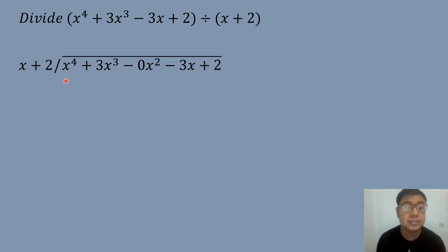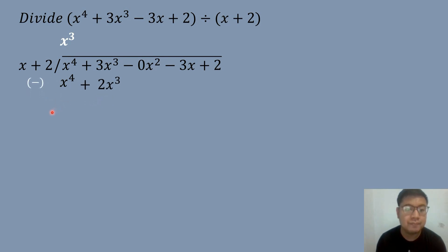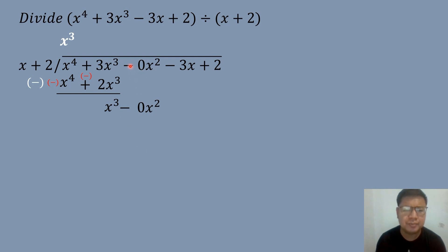The next step is to divide the first term of the dividend by the first term of the divisor. X to the fourth power divided by X equals X to the third power. Then multiply X cubed times the first term of the divisor X: X cubed times X equals X to the fourth power. Then multiply X cubed by the second term 2: X cubed times 2 equals 2X cubed. Subtract: X to the fourth power minus X to the fourth power equals 0, canceled out. Then 3X cubed minus 2X cubed equals X to the third power. Bring down 0X squared.